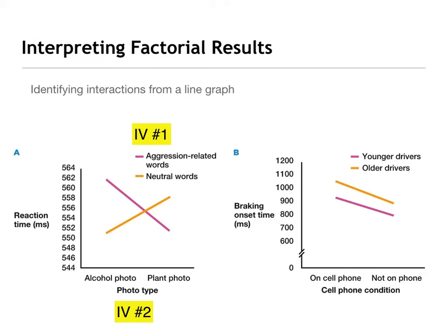We would say something like: when presented an alcohol photo, we saw higher reaction times for aggressive-related words than neutral words. However — put that caveat in there — when presented a neutral plant photo, we saw higher reaction times for neutral words than aggression-related words. So we've talked about all four data points and how something different was going on between those two. It depends on which level of the independent variable we're looking at as to what is going on.